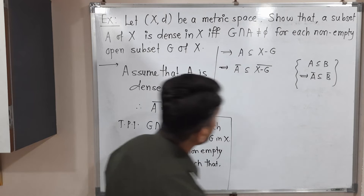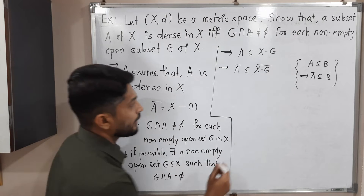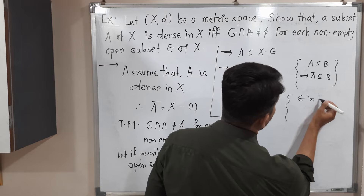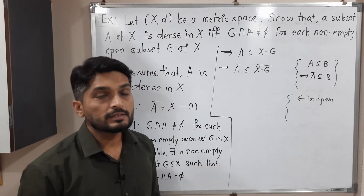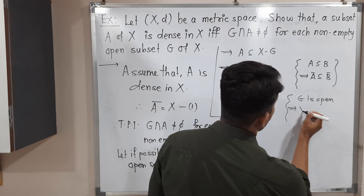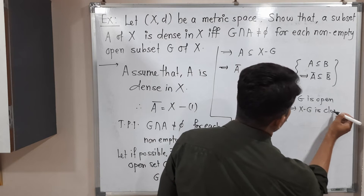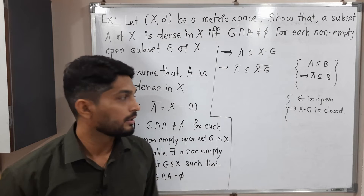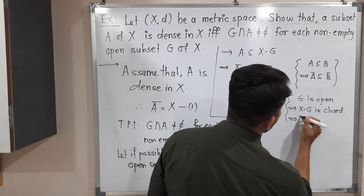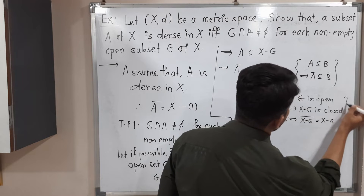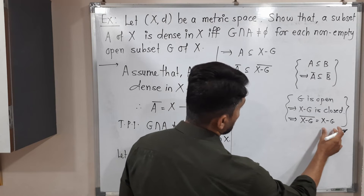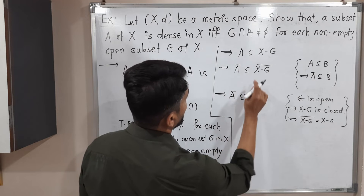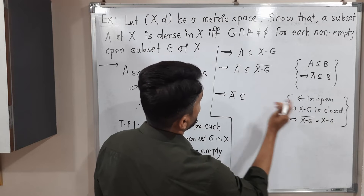Now, G is an open set. If a set is open, its complement is closed. G is open means X minus G is closed. There is one definition of a closed set: if set S is closed, then S equals S̄. Here X minus G is closed, so X minus G bar equals X minus G — the closure of a closed set is itself. Therefore Ā is a subset of X minus G.